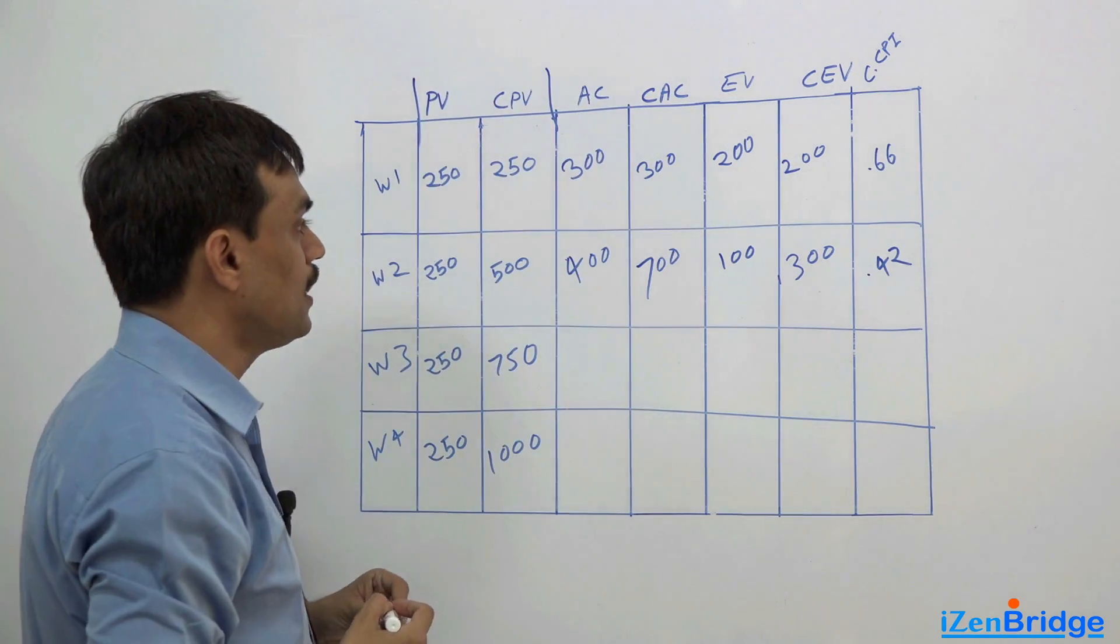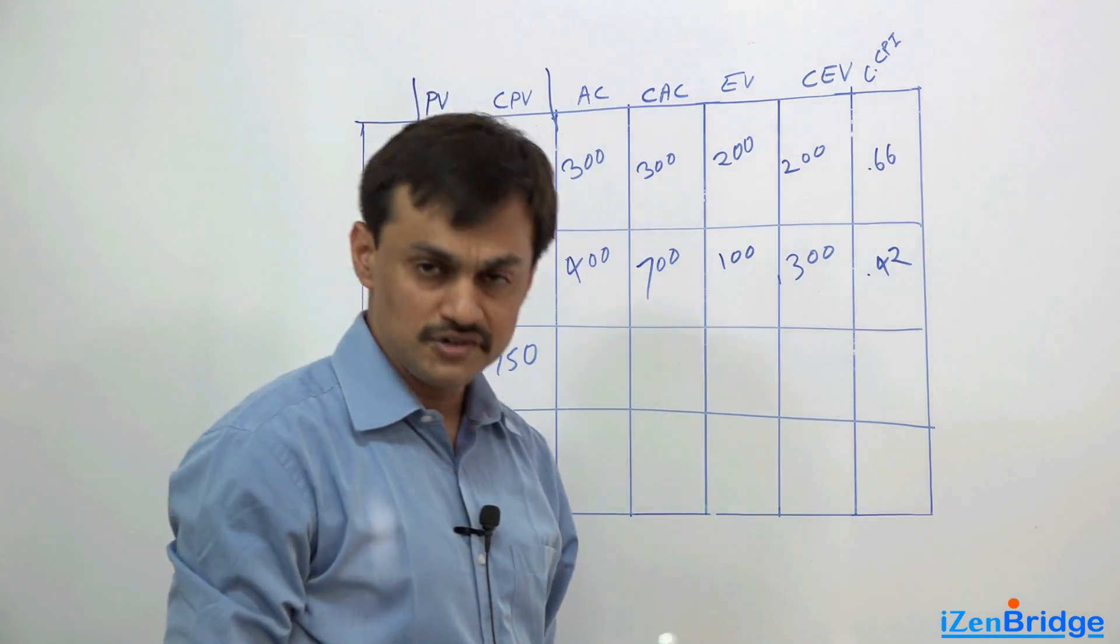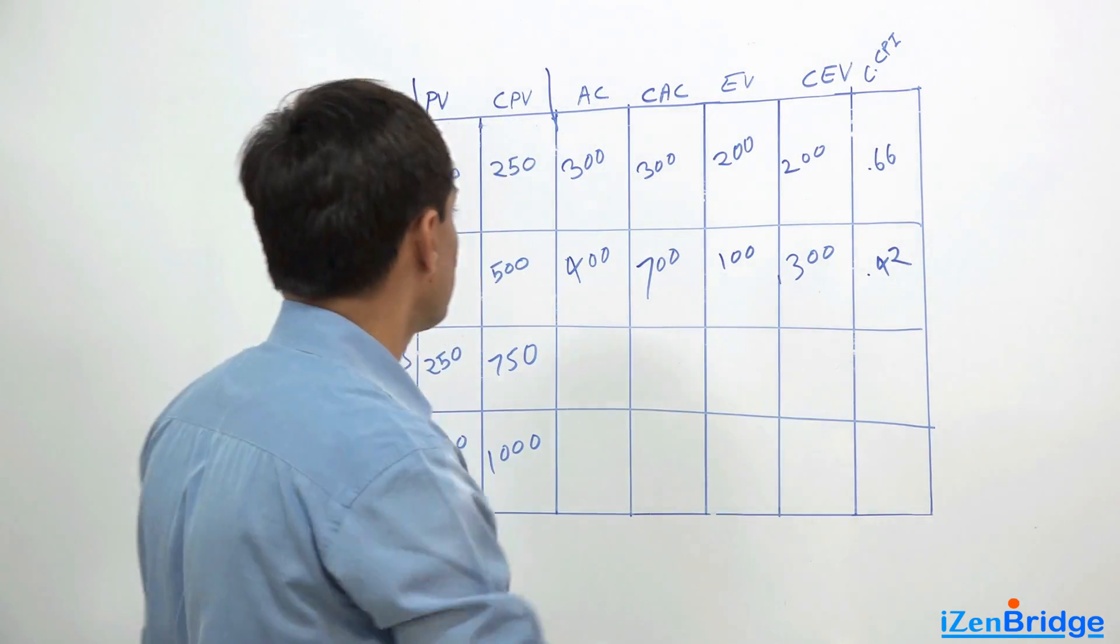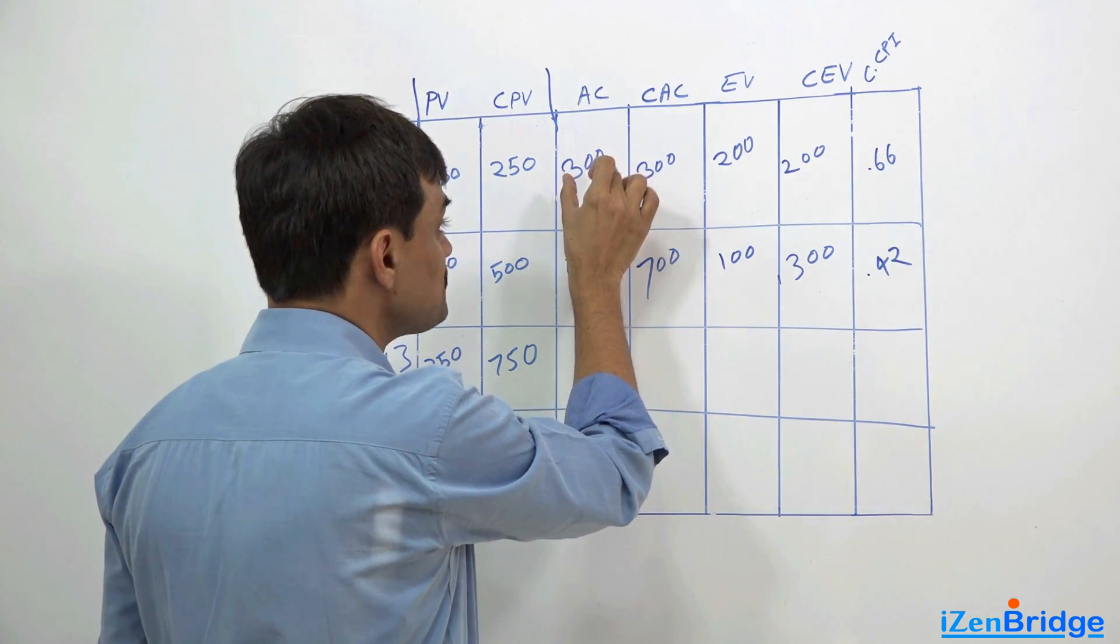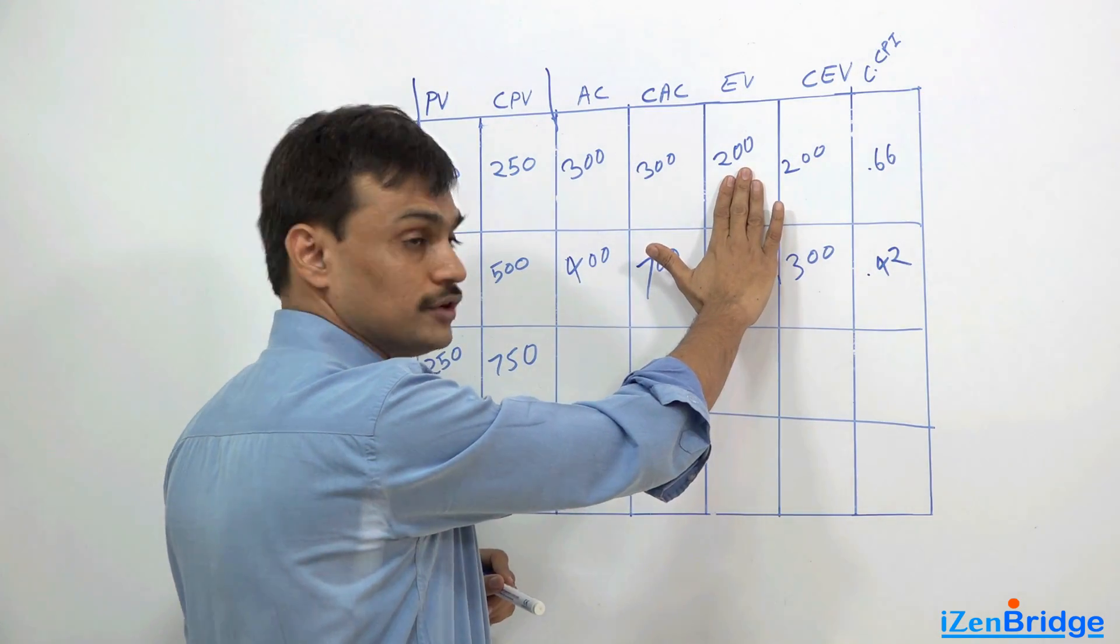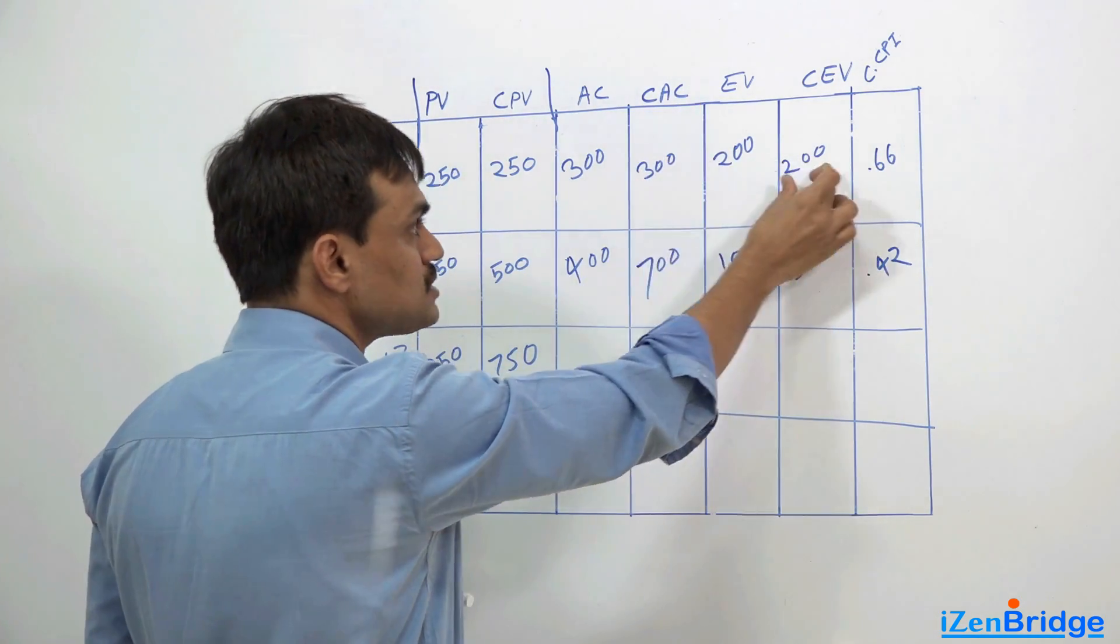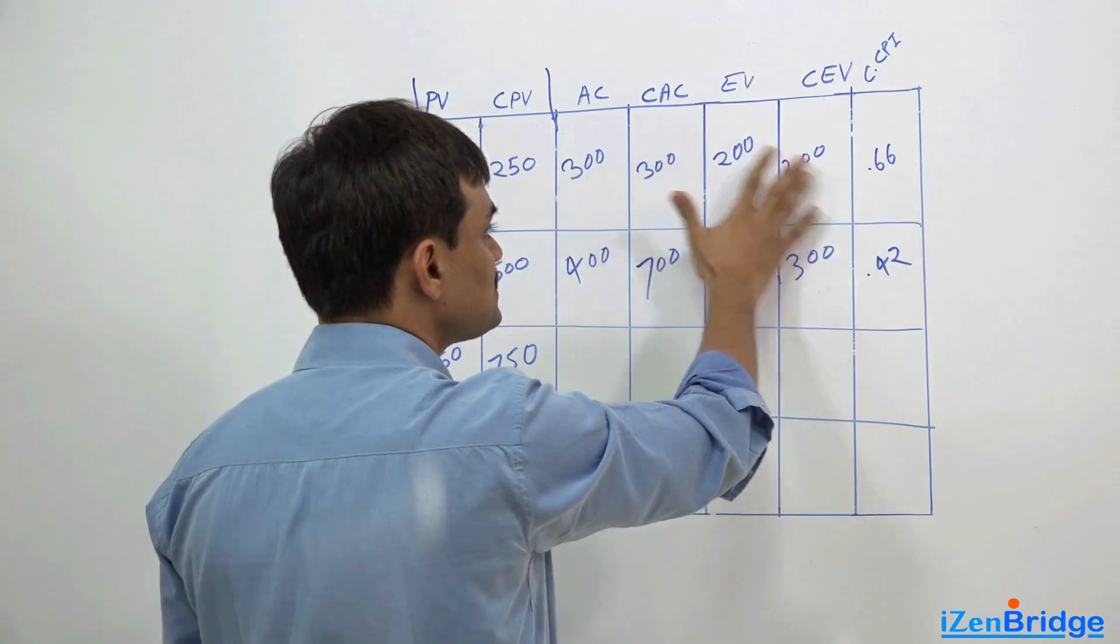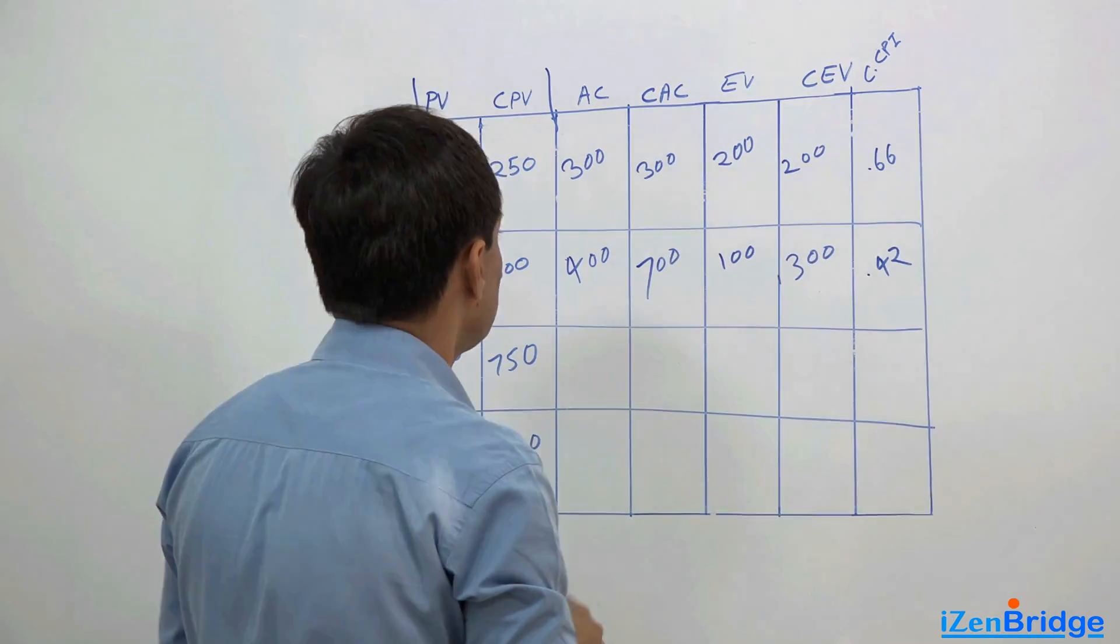Now the reality is always different. We started the work. In the first week we spent $300 and we earned $200 out of it. So I am using cumulative actual cost and cumulative earned value as well, but this is the first one, this is nothing different.